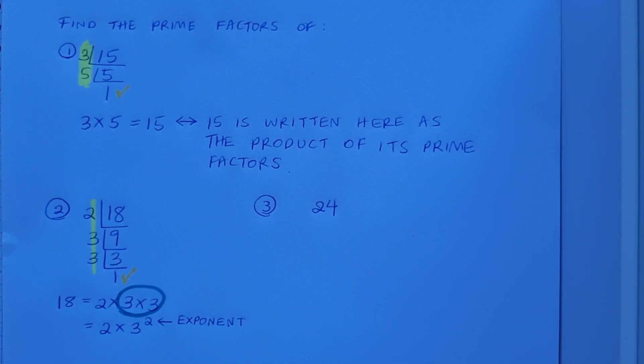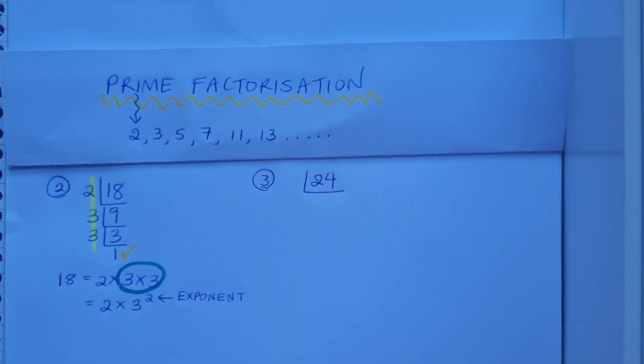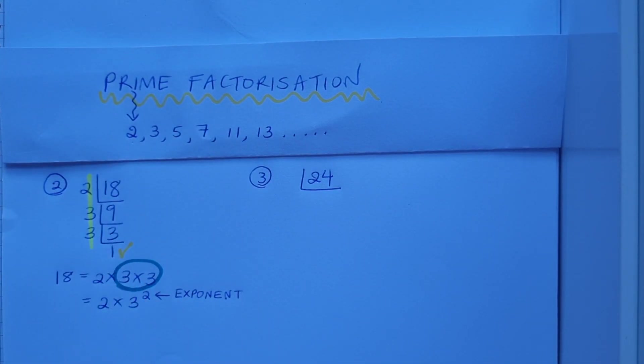If you're a bit stuck still, you can follow me on for this one more. So 24, I want to find its prime factors. What can I divide into 24? Looking at my list, 2 will definitely go in, and it'll go in 12 times.